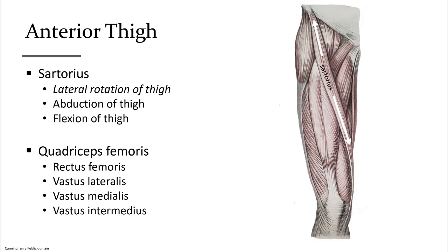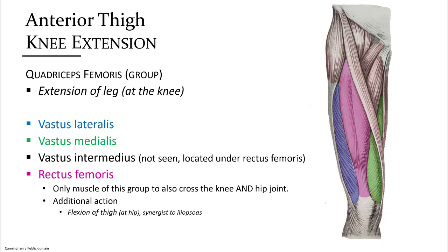The most superficial muscles of the anterior thigh include sartorius, the longest muscle in the body, going from the anterior superior iliac spine down and across the thigh to attach medially to the upper tibia. This muscle lifts and laterally rotates the femur while bending the knee to allow your lower leg to rest on your opposite knee. The quadriceps femoris is a group of four powerful muscles that are the prime movers in extension at the knee. Rectus femoris in pink is the most superficial and the only one to also cross the hip joint, aiding in hip flexion. The three vastus muscles — vastus lateralis in blue, vastus medialis in green, and vastus intermedius — only extend the knee.